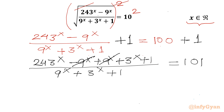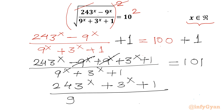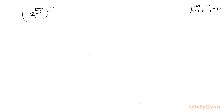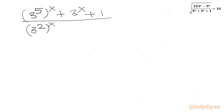The two 9^x terms cancel. So we are left with (243^x plus 3^x plus 1) divided by (9^x plus 3^x plus 1) equal to 101. Now we can write 243 as 3^5, and 9 as 3^2. Substituting these into our equation gives us (3^5)^x plus 3^x plus 1, divided by (3^2)^x plus 3^x plus 1, equal to 101.